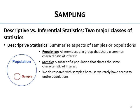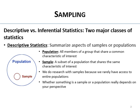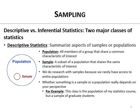We do research almost exclusively with samples because we don't really have access to entire populations. Whether something is considered a sample or population really depends on your perspective. So this class, for example, is a population of my statistics course, but a sample of all graduate students.